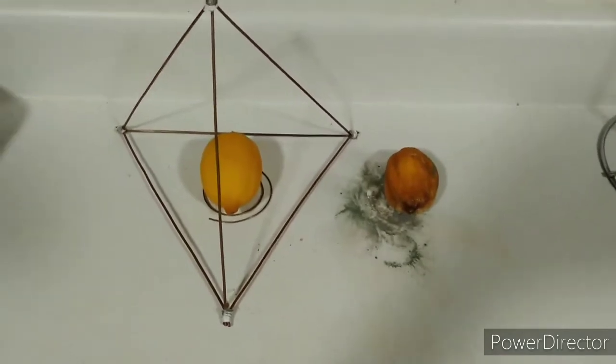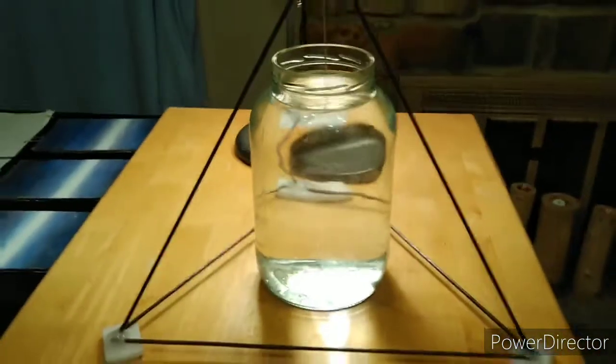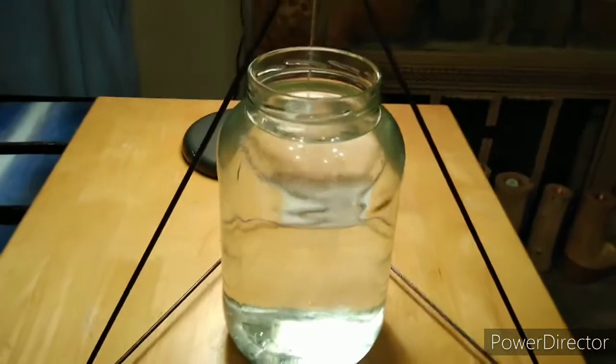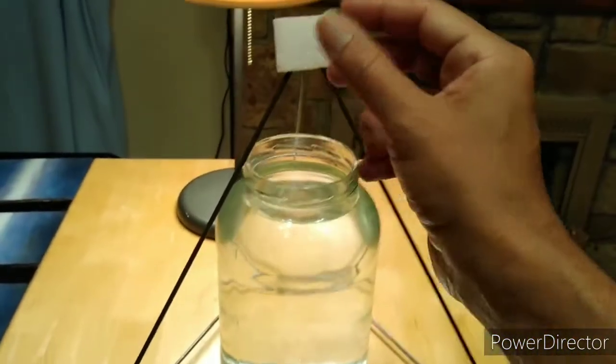So we went, hmm, and we decided, okay, we're gonna take it to the next level. We're gonna put a gallon jug, put it in a glass jar, and put the tetrahedron, or put the spiral underneath, and see what this does.